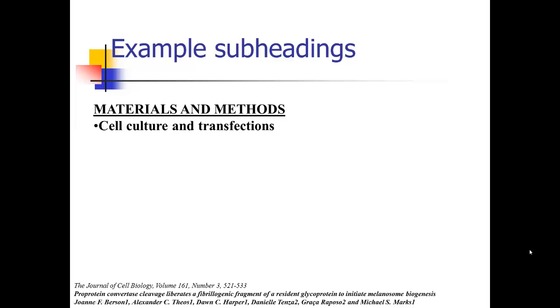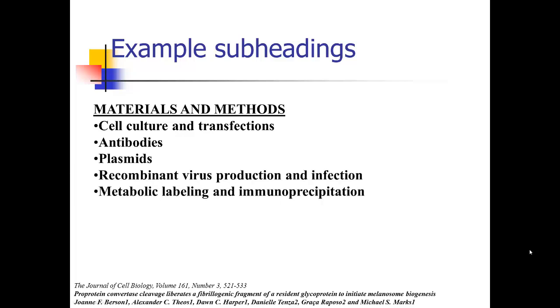Another paper had cell culture and transfections, a biological paper: antibodies, plasmids, recombinant virus production and infection, et cetera. You get the idea. Having a very specific section for each of those important pieces of the experiment.